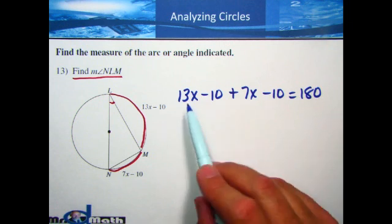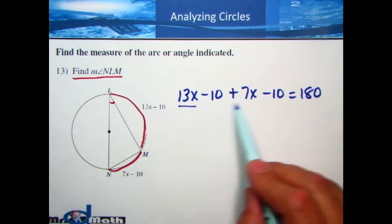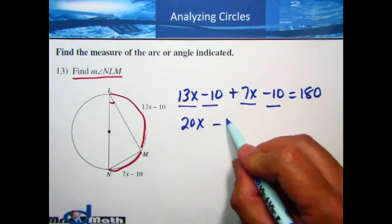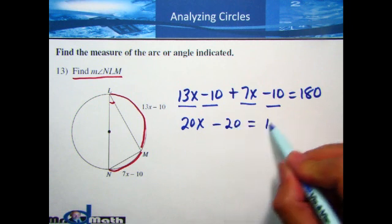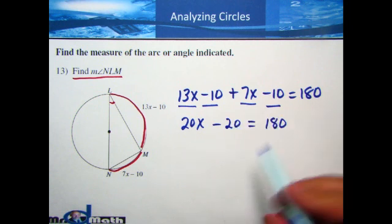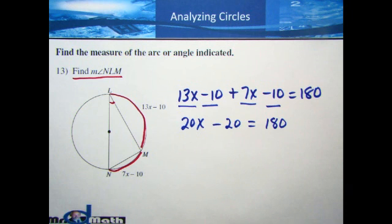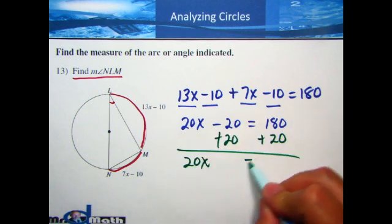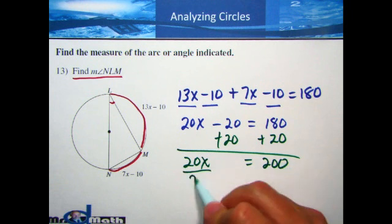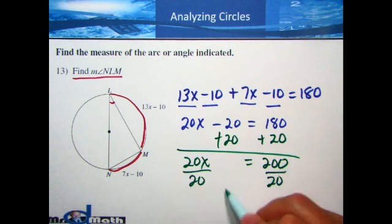Given that, let's add some like terms. We have 13X and 7X, which makes 20X. We have negative 10 and negative 10, which makes negative 20, and that equals 180. The algebra gets pretty simple at this point — we take negative 20 and add it to both sides, which gives us 20X equals 200. We divide both sides by 20, and that tells us X equals 10.